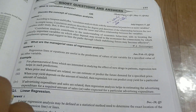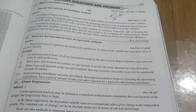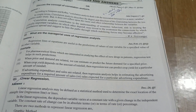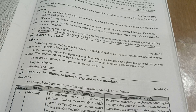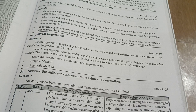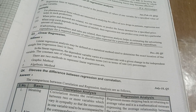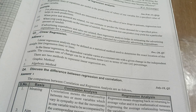The next important question is linear regression. Linear regression is a statistical method used to find the exact location of a straight line. To find out the exact location of a straight line, we can use the linear regression method of statistics.